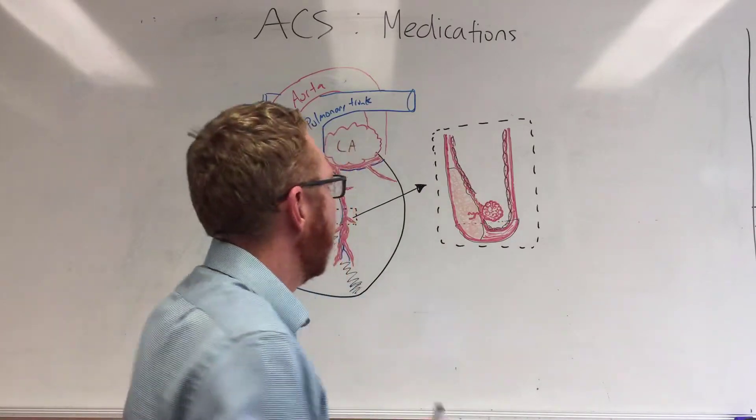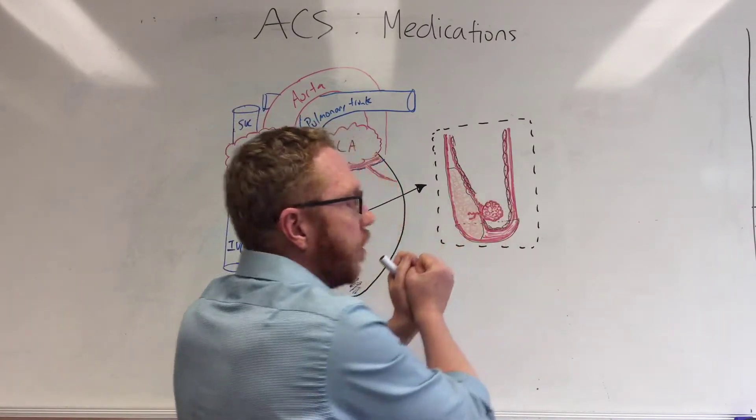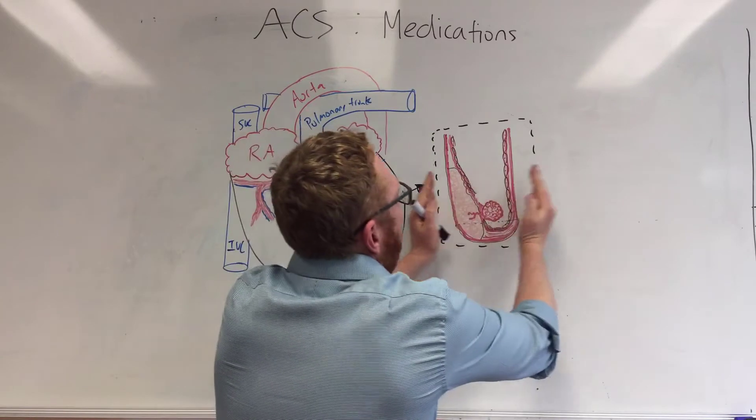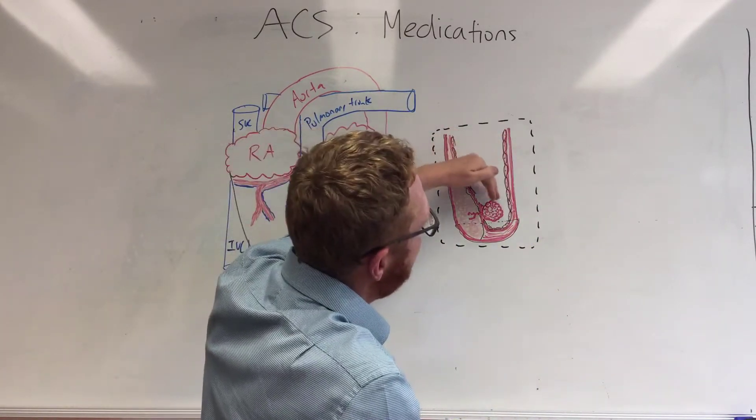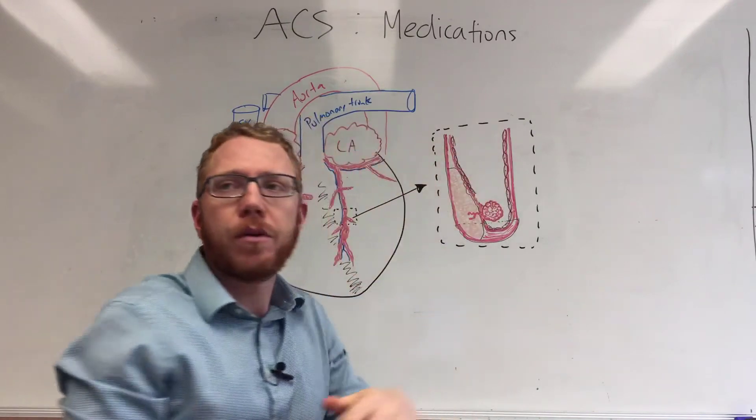GTN is a drug that would cause nitric oxide to be exposed and widen the diameter of the blood vessels to allow more blood to get through. Because the problem is blood is now blocked by this particular thrombus.